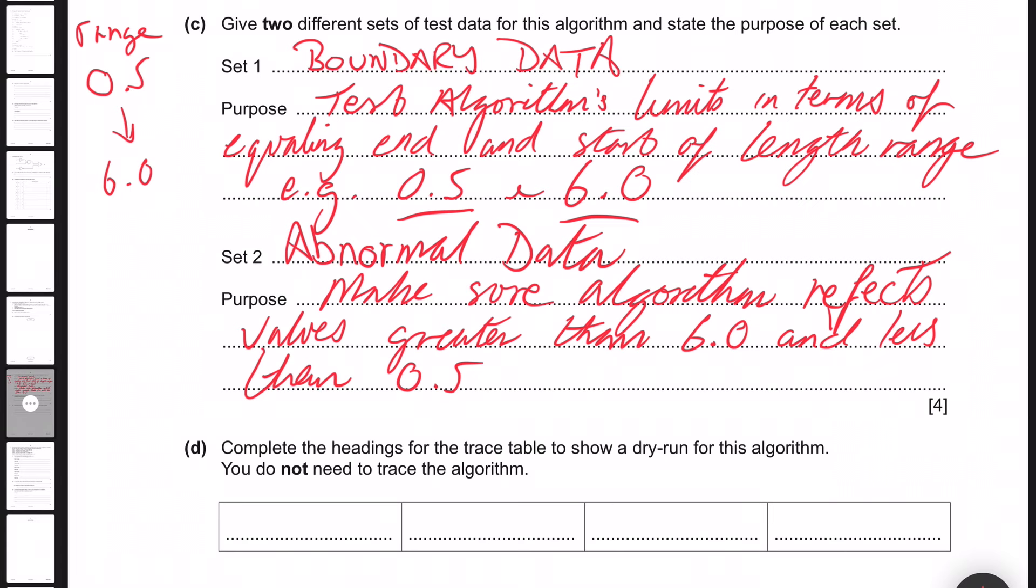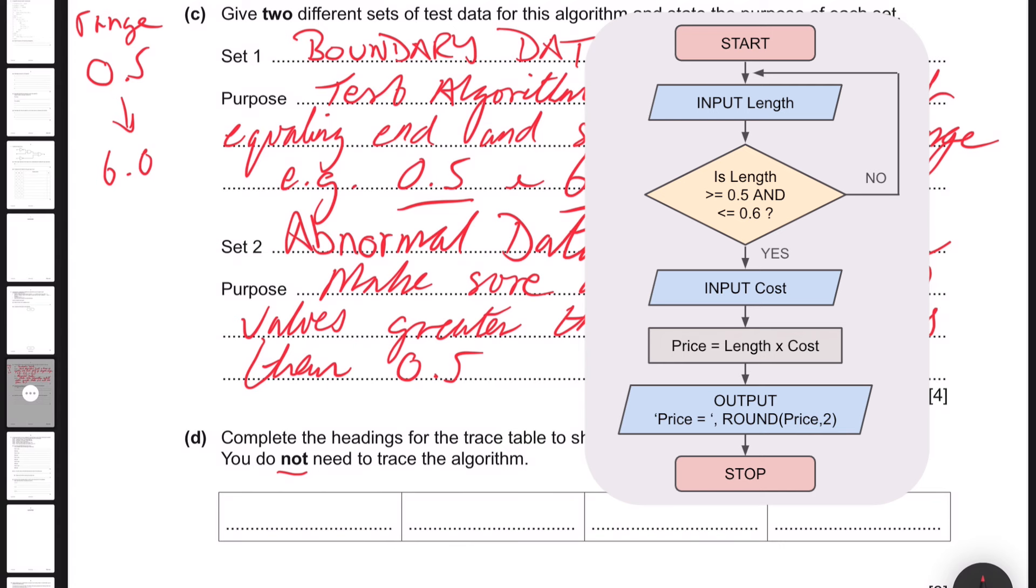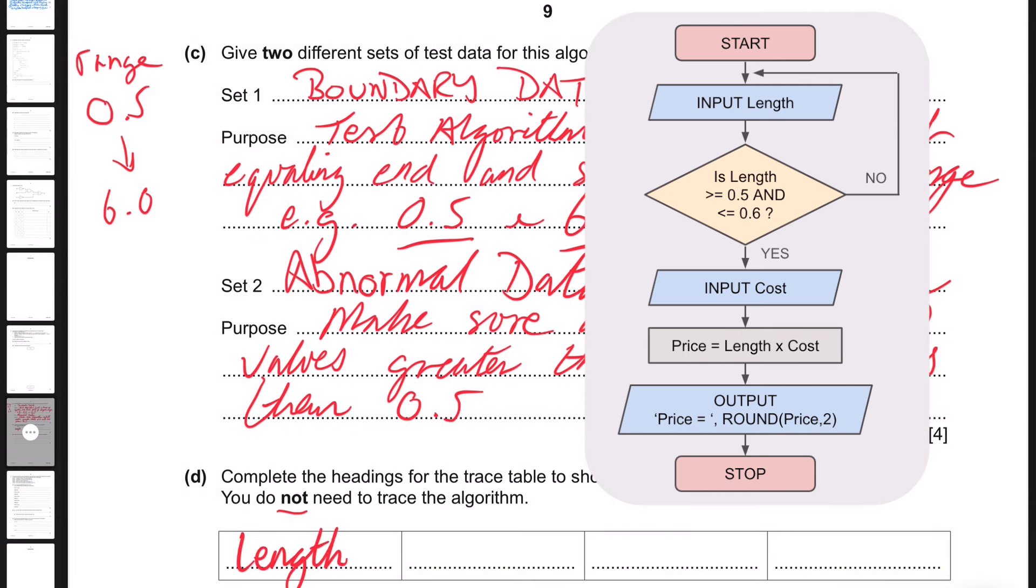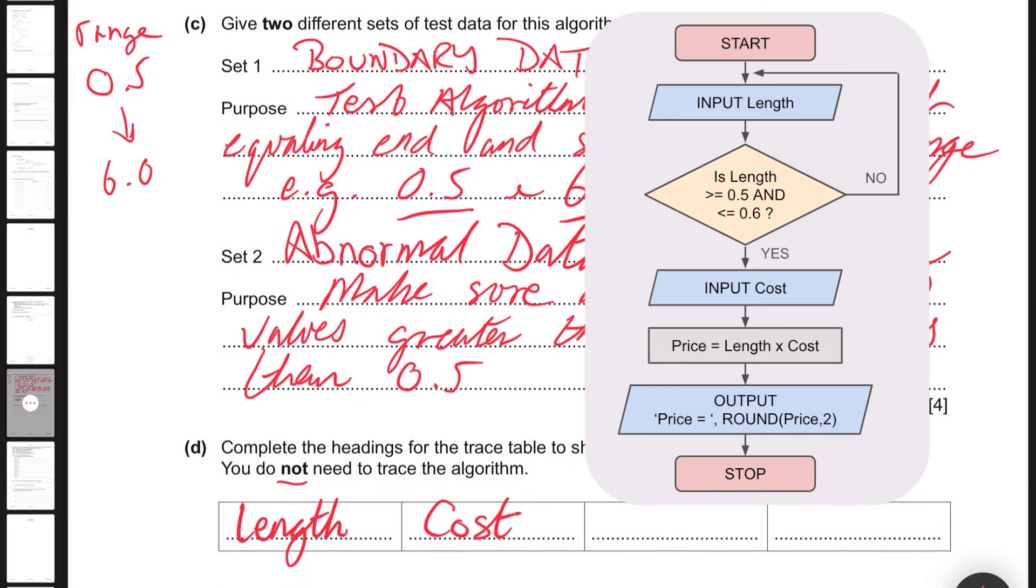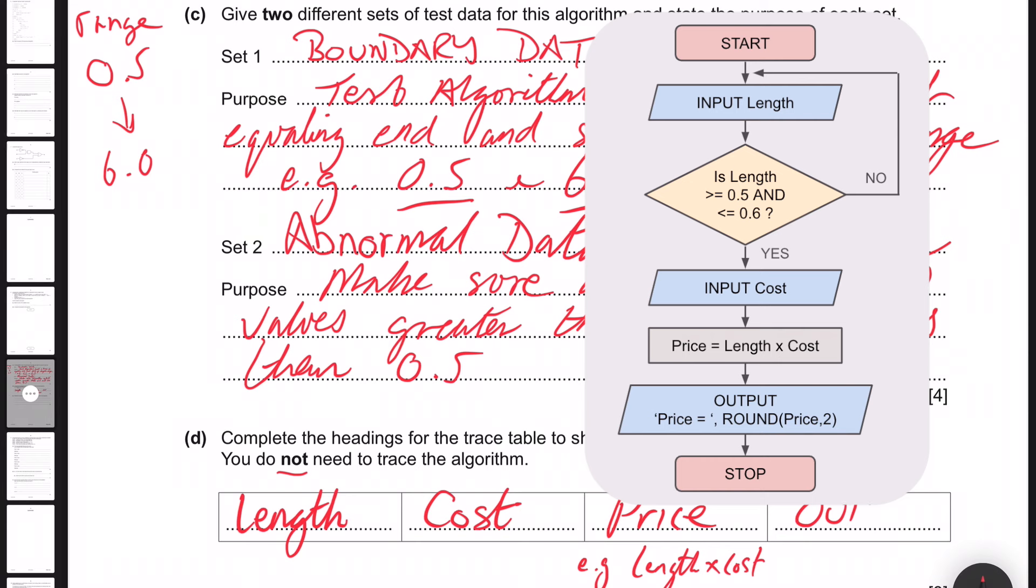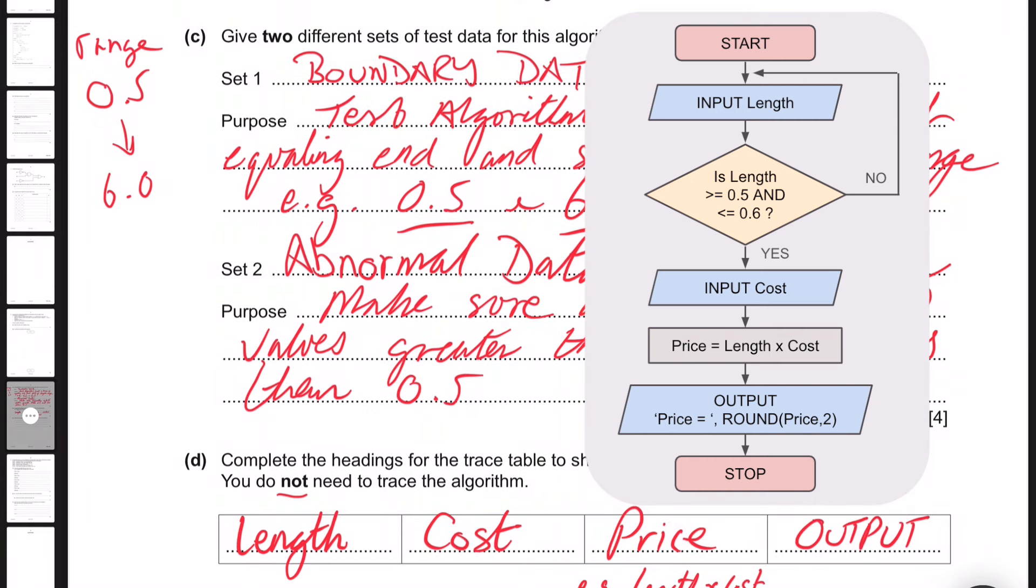Part D: Complete the headings for the trace table to show a dry run for the algorithm. You do not need to trace the algorithm. Well, if I put the algorithm back in, we can see that what we need to be looking at are the variables. So we'd use a variable length, because this is going to be where we're going to put test data. We're also going to use cost, because this is a constant in terms of cost per meter. So we're going to use a variable length and constant cost. When we multiply both of these together we would get price. And to finish off, we would do an output. So what would be outputted based on these variables, constants, calculations?